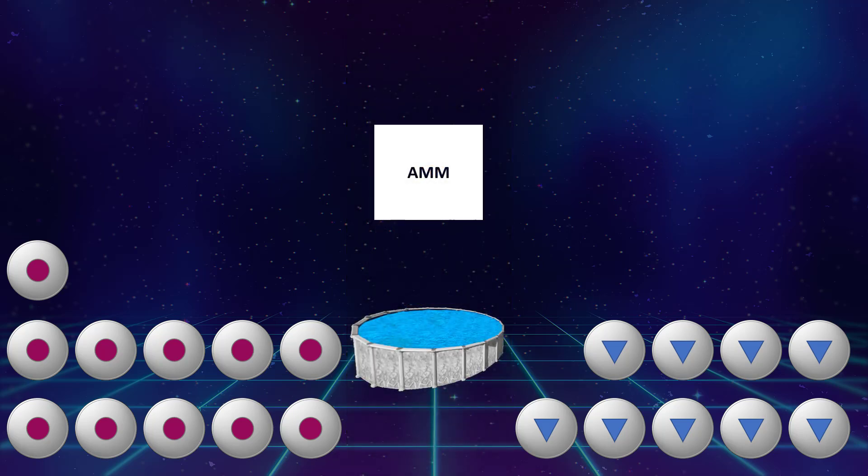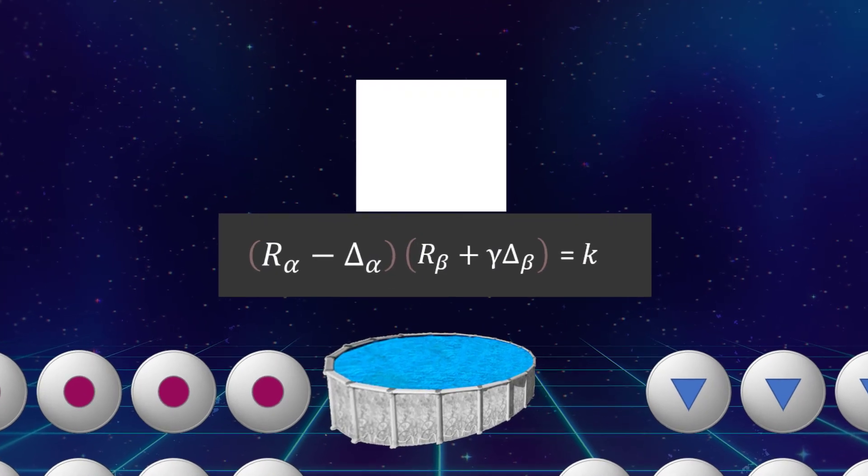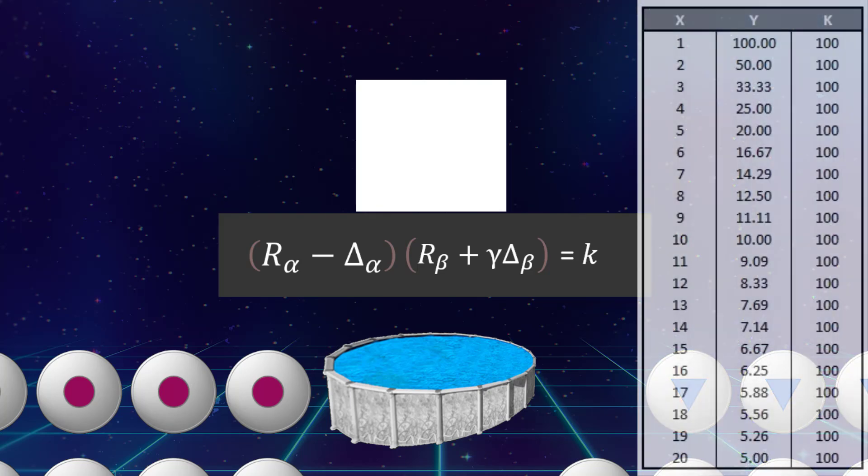It does this using the constant product market maker equation, which is shown here, but beyond our scope for this particular video. The important part is that this constant product market maker, or CPMM, uses a constant, k, which is created by multiplication, hence being named a constant product. In other words, some number you always get when multiplying the two things in the pool by one another.